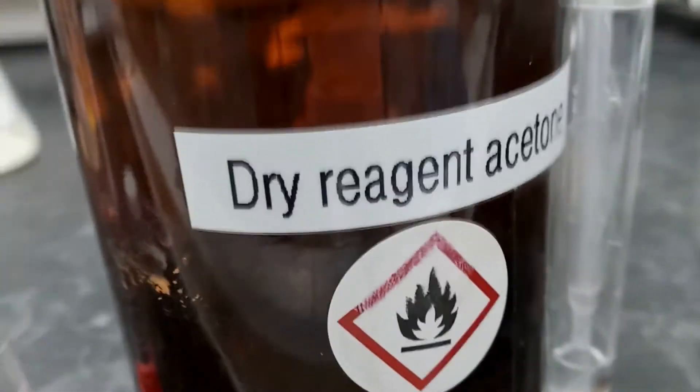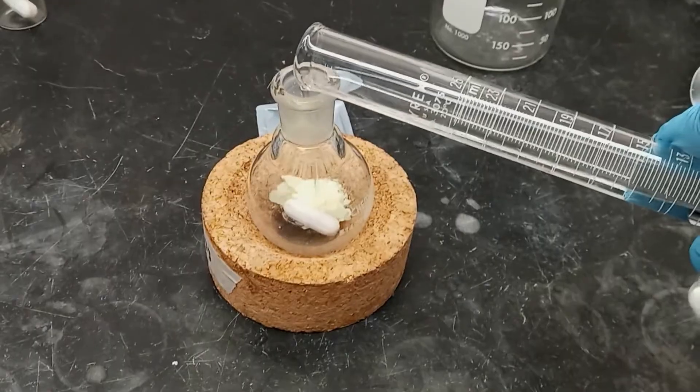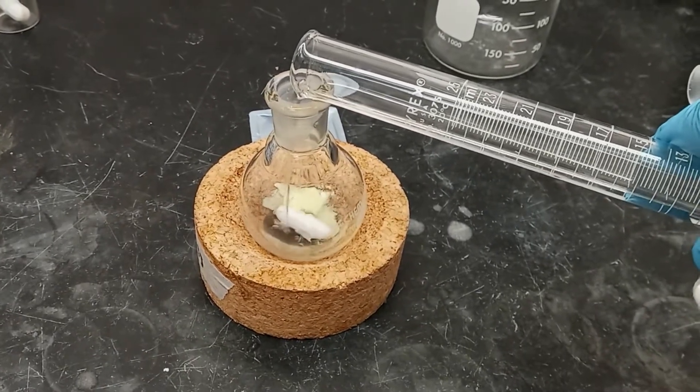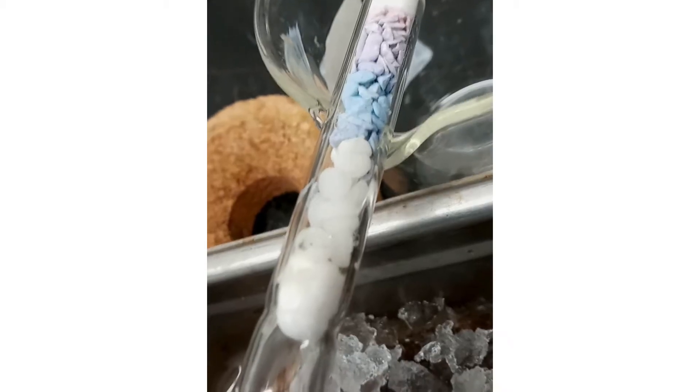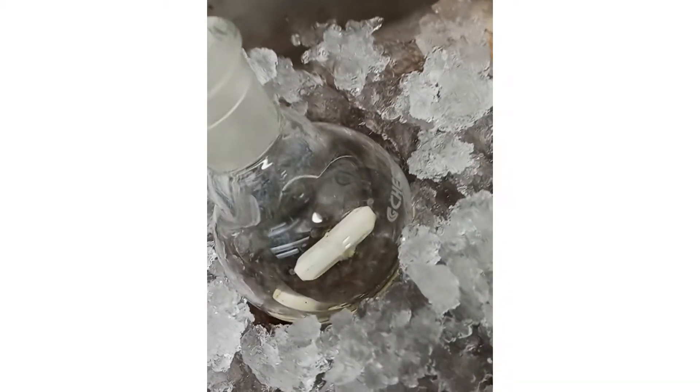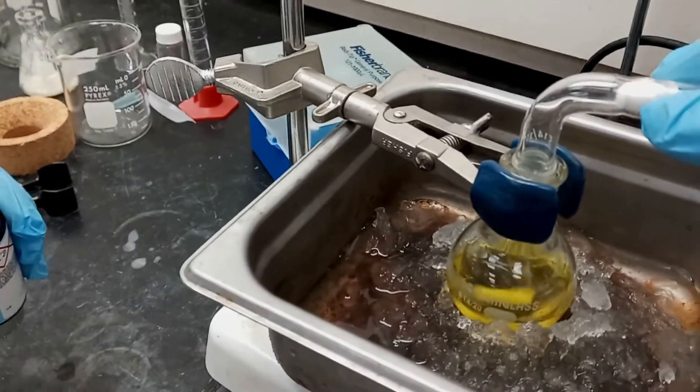Next, we measured out 12 ml of dry reagent acetone and added it to a fresh round-bottom flask containing a stir bar and our dry phenol. We immediately sealed the flask with the drying tube and chilled it in an ice bath while we got ready for the next step.